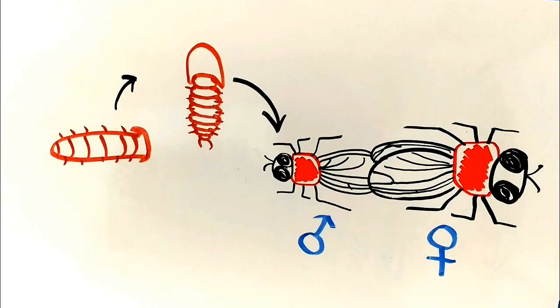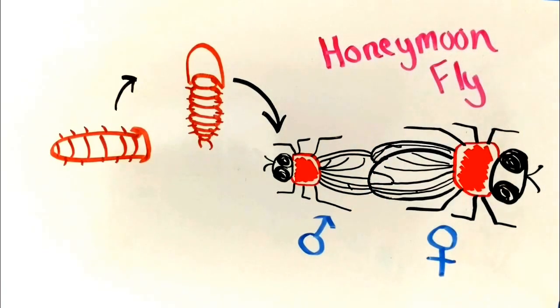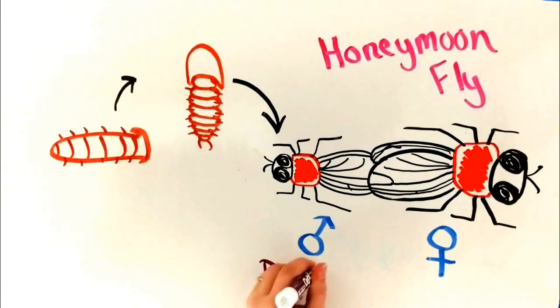These insects are coupled for the majority of their adult life. That is how they gained other common names, like the honeymoon fly and the double-headed bug.